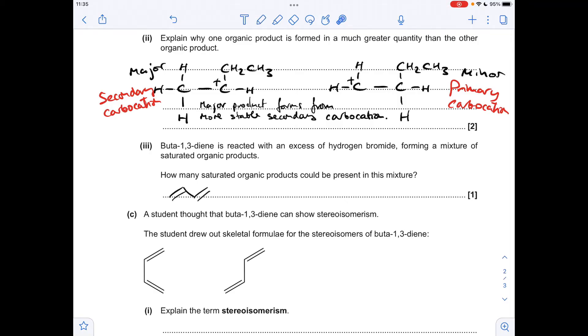Moving on to the last part of B: How many saturated organic products could be present in this mixture when buta-1,3-diene reacts with an excess of hydrogen bromide? It's going to react with two moles of HBr because it's got two double bonds. We just think about where the bromines could add. You could have both bromines here and here at each end, you could have the bromines going here and here, or you could have a bromine on the very end on the left and on this one here. So the answer was three.